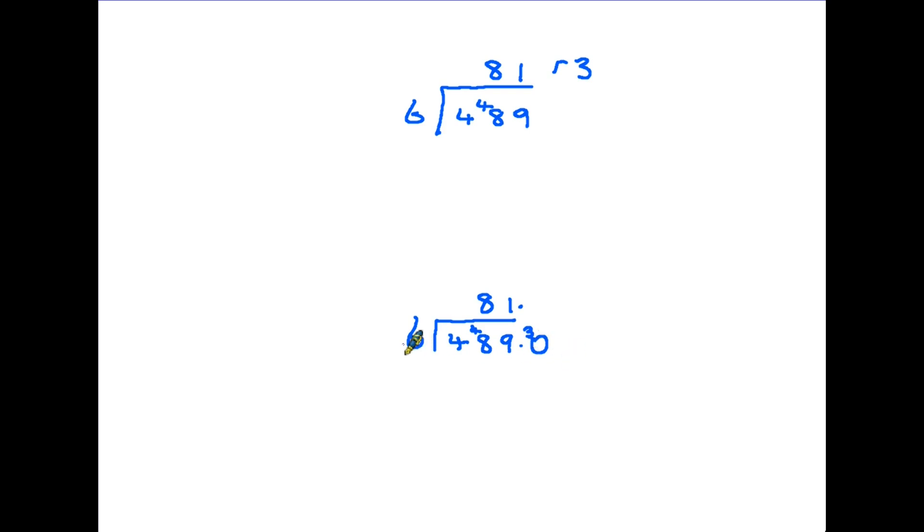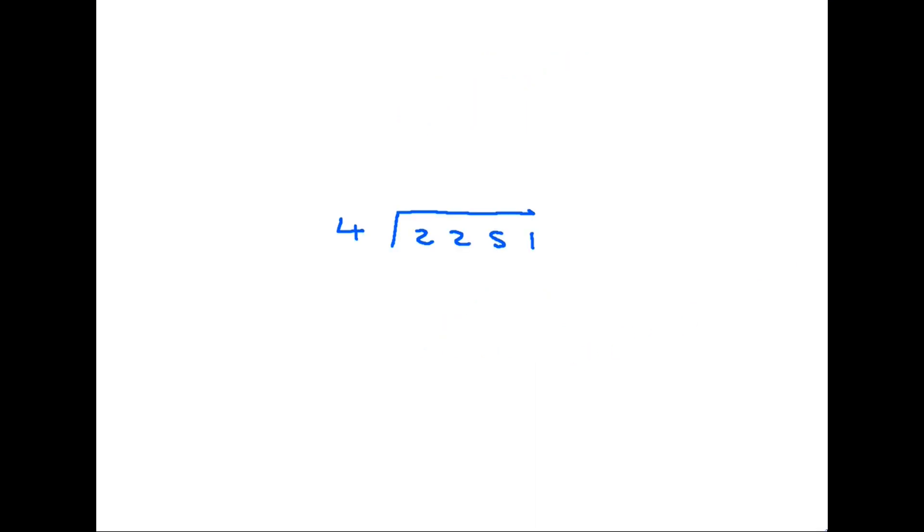We then say how many sixes are there in 30? And the answer is 5. So 489 divided by 6 is 81.5. I will do another example of this to see if we can make it a little bit clearer. Let's take this one nice and slowly: 2251 divided by 4.